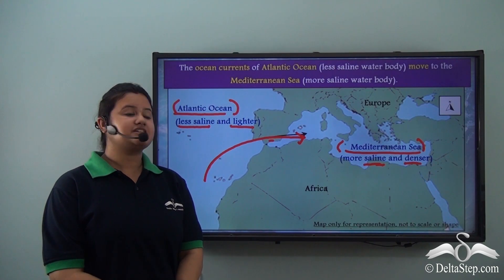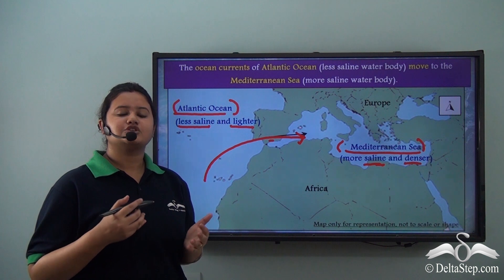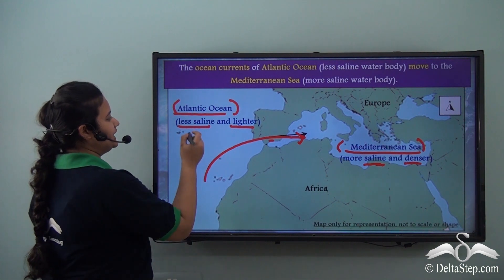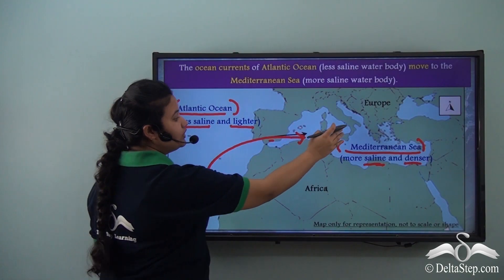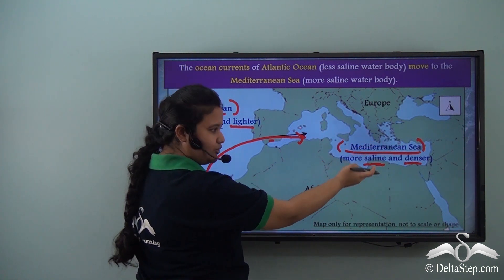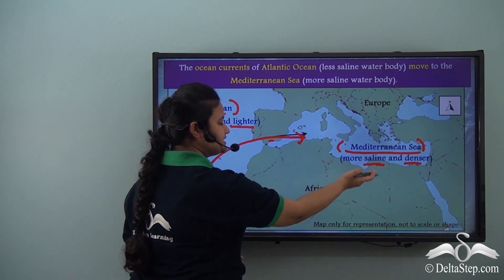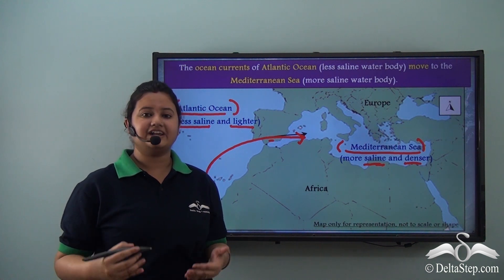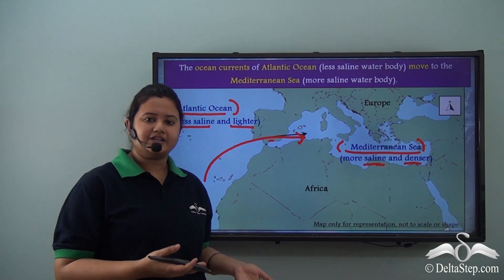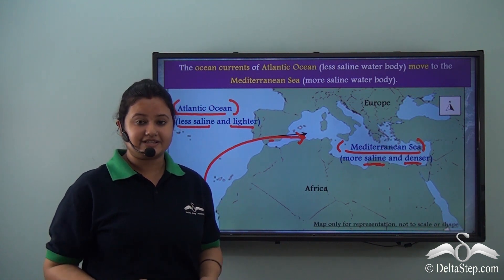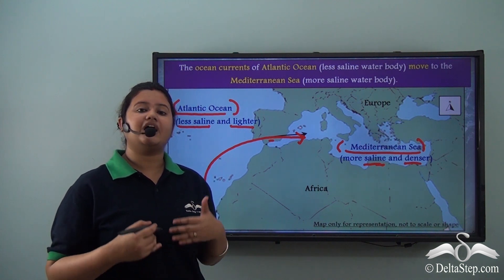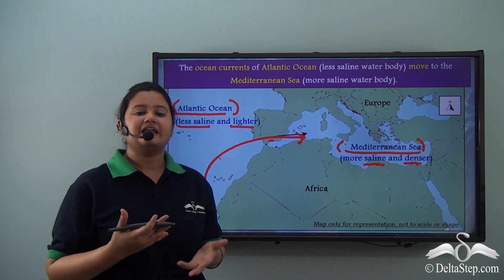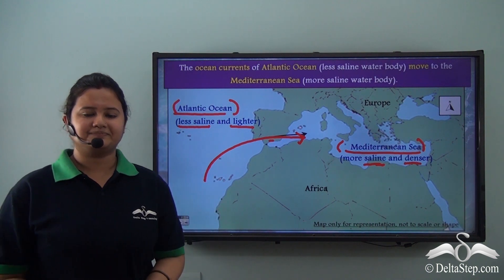Just as ocean currents regulate global temperature, they also try to regulate the salt balance of water bodies. Ocean currents flow to maintain the salt balance — where salinity is low, water flows toward regions where salt content is more, and where salt content is high, it sinks and flows toward regions where salt content is less. In this video we studied how temperature and salinity influence the movement of ocean currents. In our next video we will look at other factors: the rotation of the earth, planetary winds, and the shape of land masses.